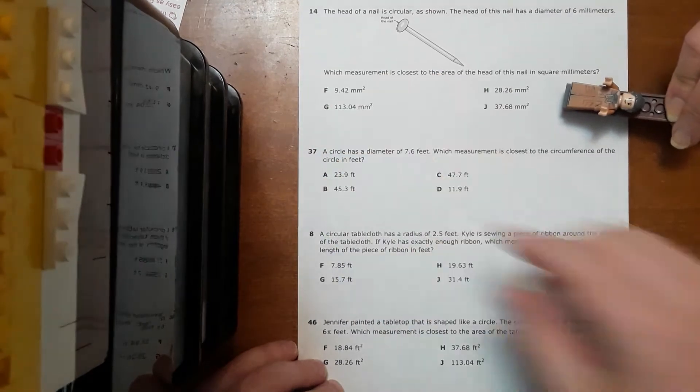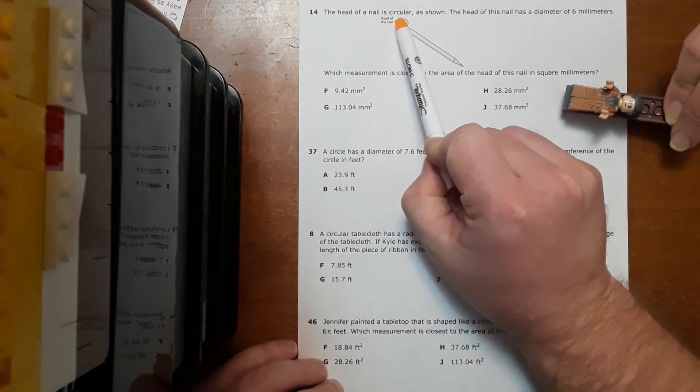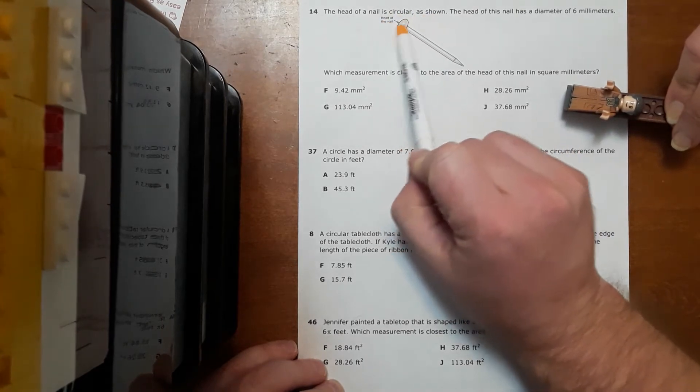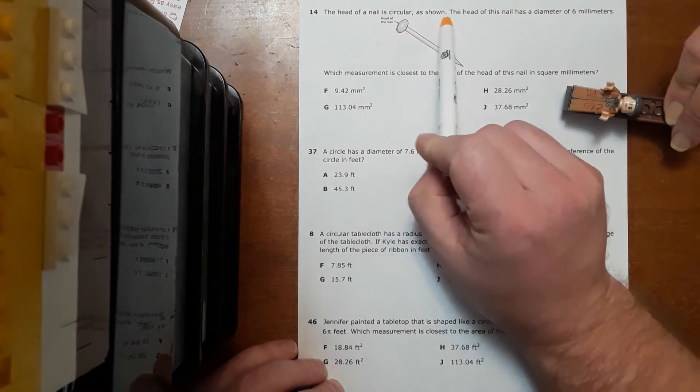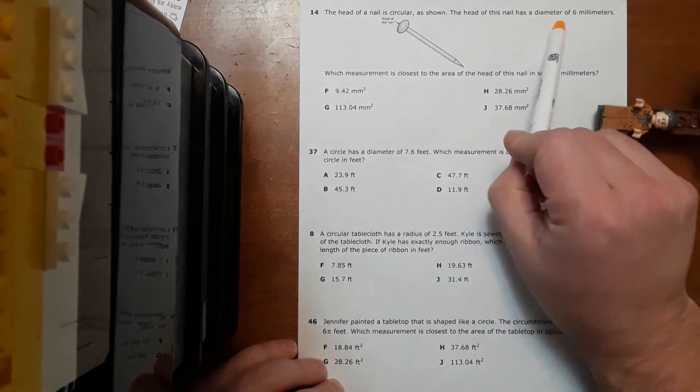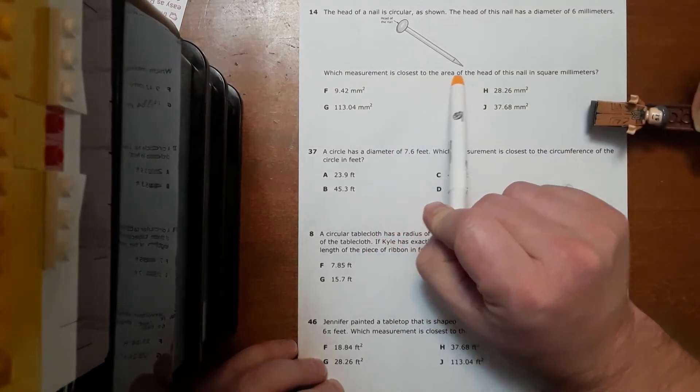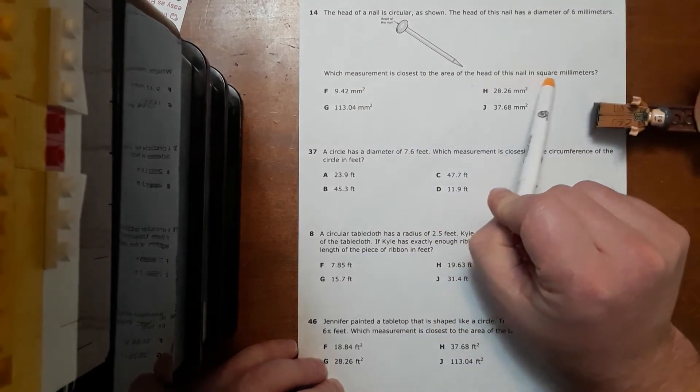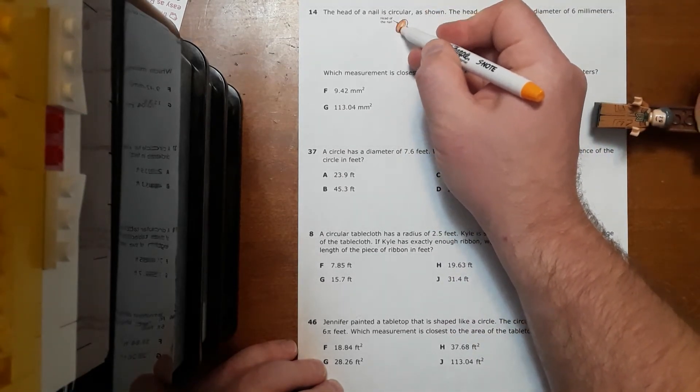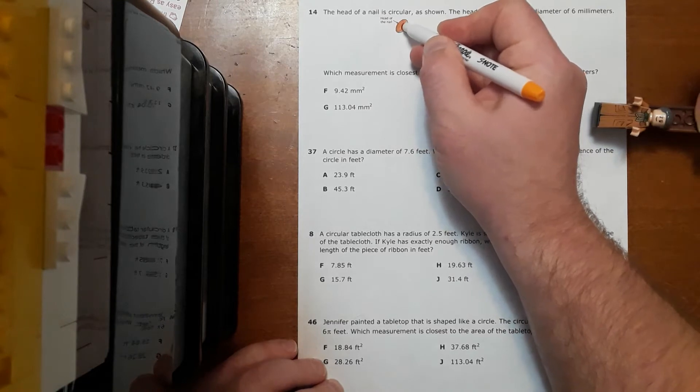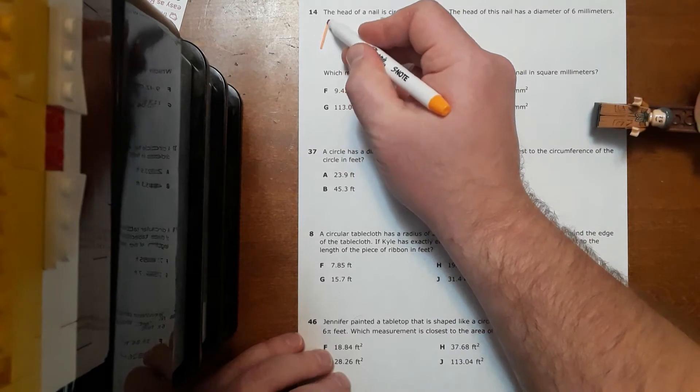Alright, well, the shapes we're dealing with today are circles. And this question says, the head of a nail is circular, as shown. And they even label it for you if you don't know what the head of a nail is. The head of this nail has a diameter of 6 millimeters. Which measurement is closest to the area of the head of this nail in square millimeters? So I'm trying to figure out, like if I had a little tiny paintbrush and wanted to paint the top of the head of the nail, how much paint would I need? What's the area I would have to cover?